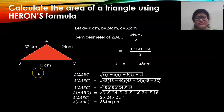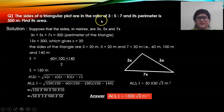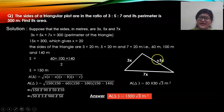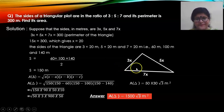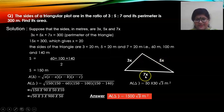Let's look at another problem based on Heron's formula. The sides of a triangular plot are in the ratio 3:5:7 and its perimeter is 300 meters. You have to find its area. A triangle is drawn here, though it is not mandatory. One side is 3x, another is 5x, and the third is 7x.